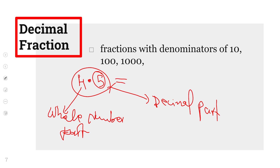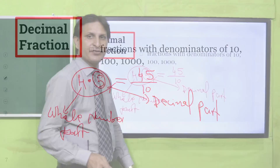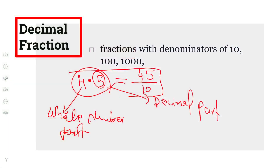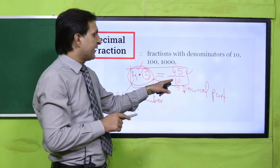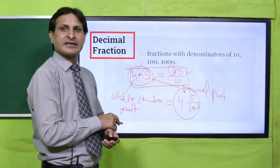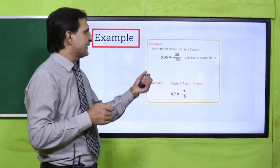Five decimal part है और यहां पर इसका denominator होगा 10 — क्योंकि decimal point के बाद one digit है। तो इसको हम write कर सकते हैं forty-five over ten। दोनों fractions equal हैं। अगर mix number में write करना हो तो four whole five over ten — यह इस तरह बन जाएगा। अब एक example देखते हैं।